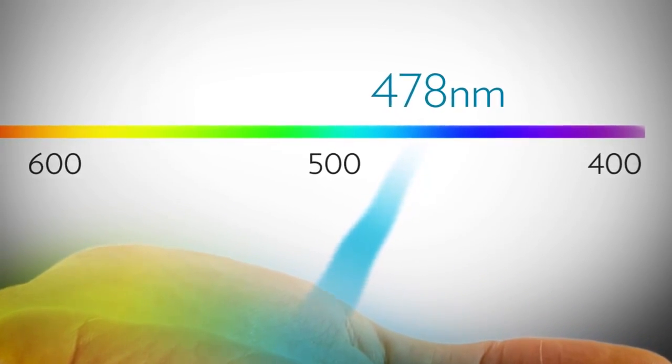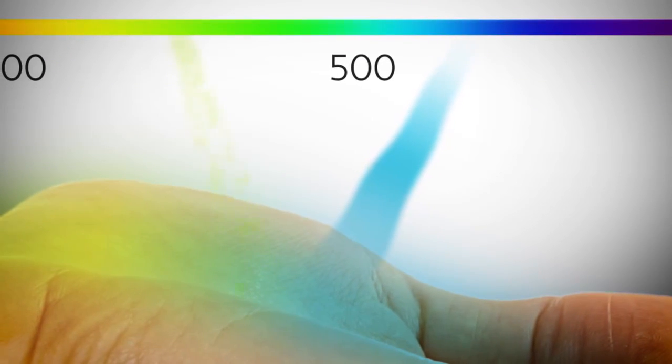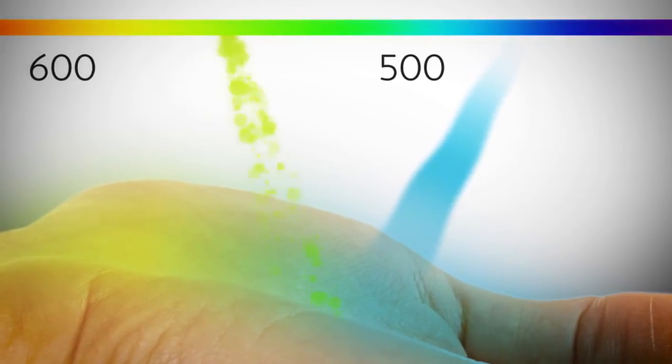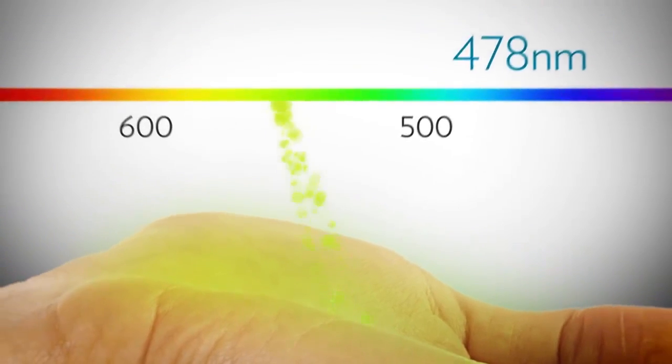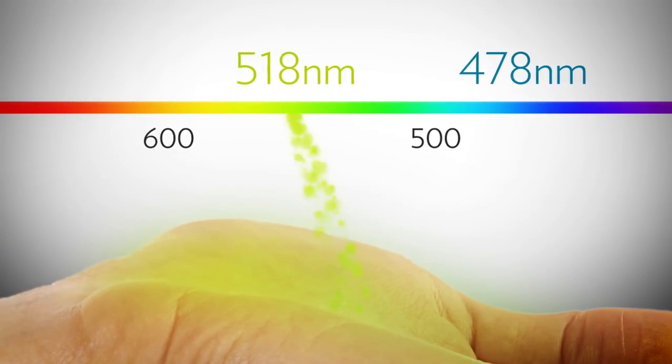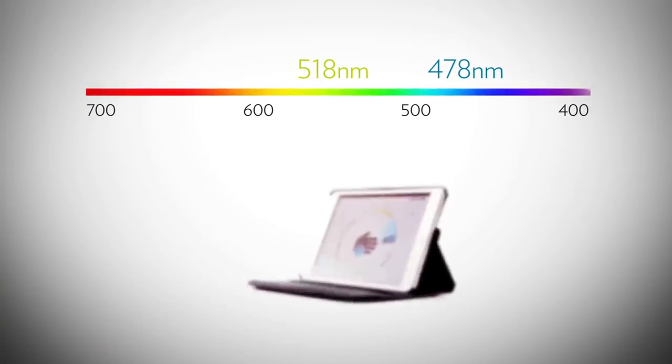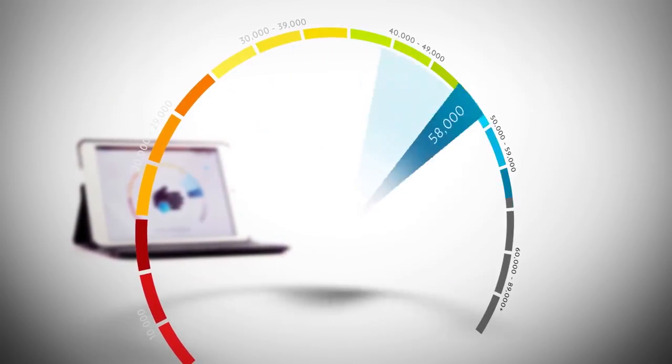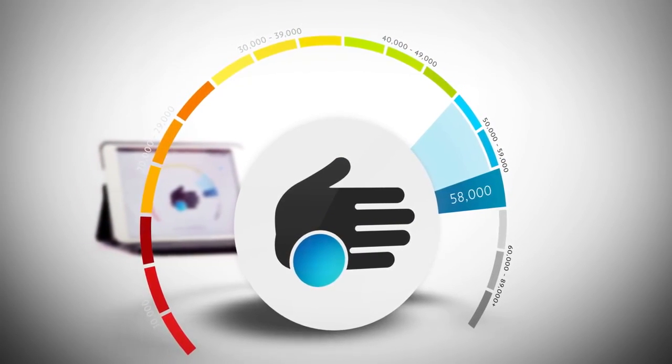When a 478 nanometer photon of light comes into contact with a carotenoid, something interesting happens. The 478 nanometer photon resonates with the carotenoid molecule and becomes a 518 nanometer photon of green light. Because the number of photons generated is proportional to the concentration of carotenoids in the skin, these green photons are then counted to provide the carotenoid score.